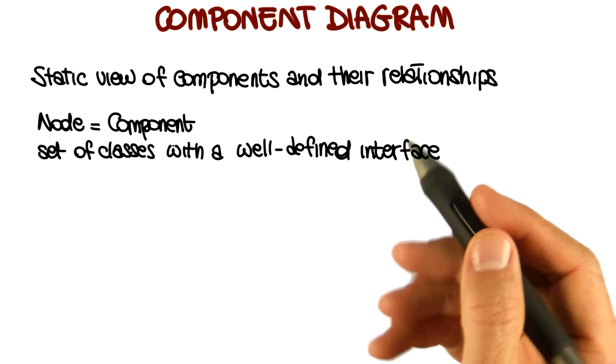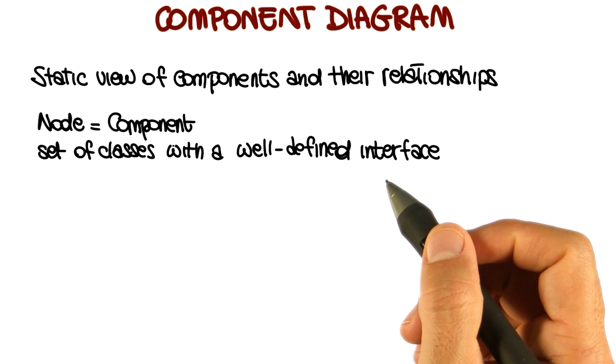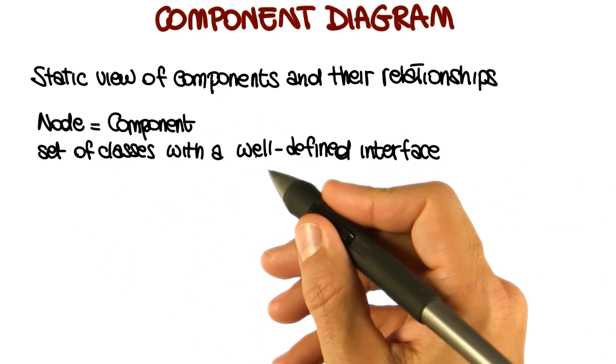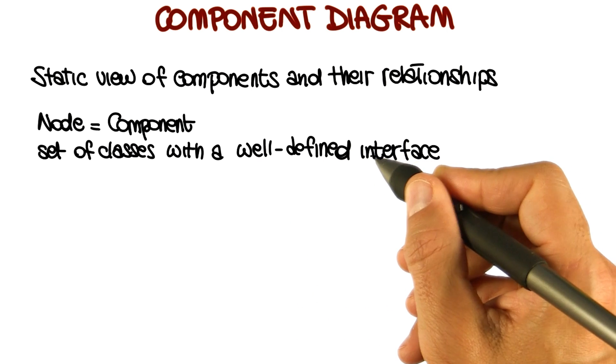More precisely, a node in a component diagram represents a component where a component consists of one or more classes with a well-defined interface.